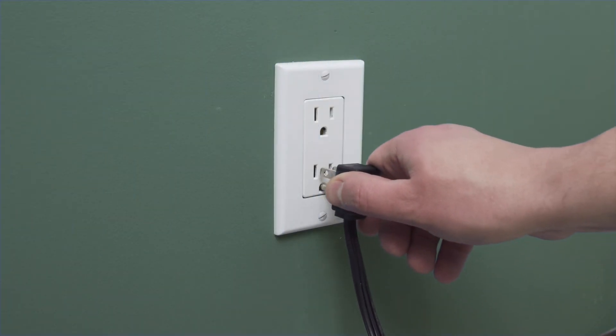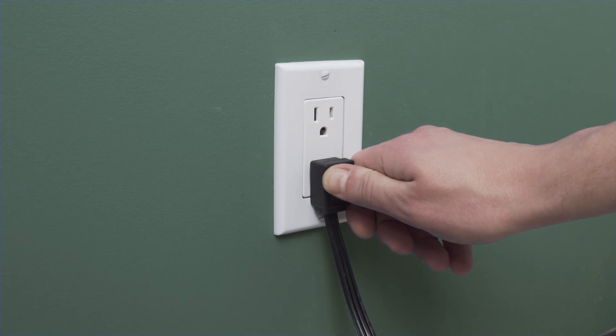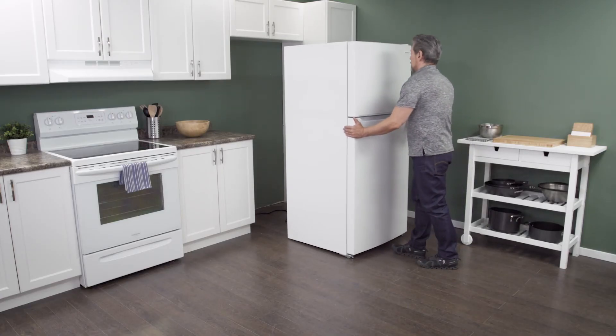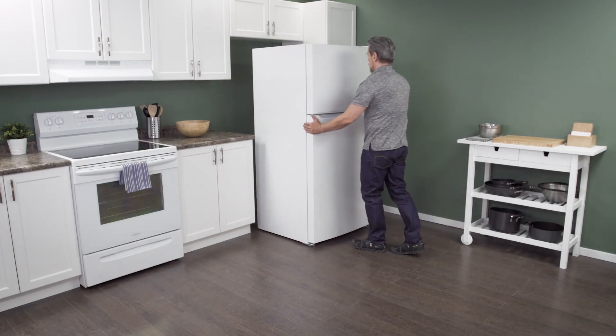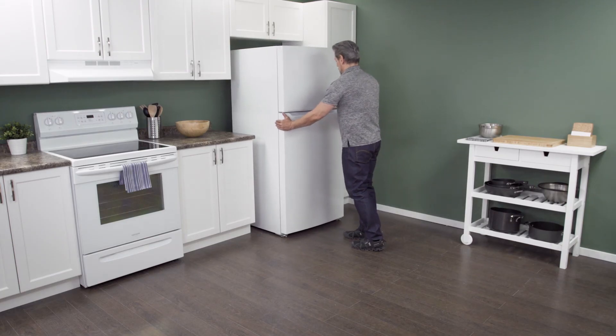Plug in the cord to reconnect the power. Now slide it back into place. Make sure to leave a couple of inches of space between the refrigerator and the wall. This will allow for proper airflow.